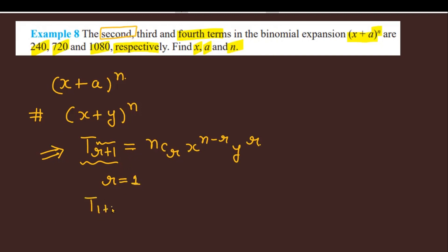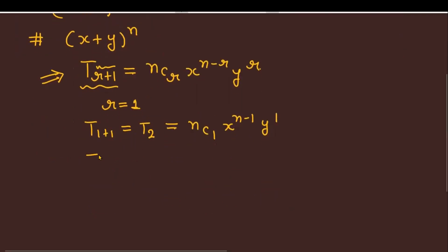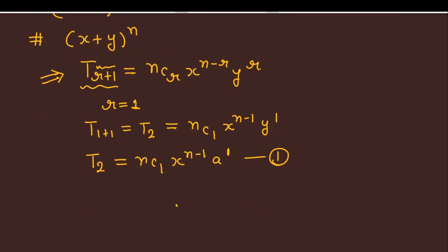For the second term, r=1, so we get T2 = nC1 * x^(n-1) * y^1. Since y = a in our expression, this becomes T2 = nC1 * x^(n-1) * a^1. This is equation number 1.